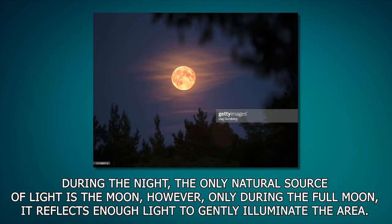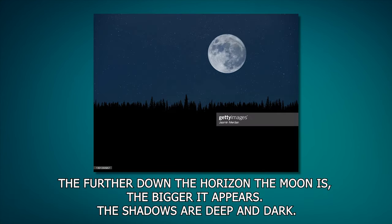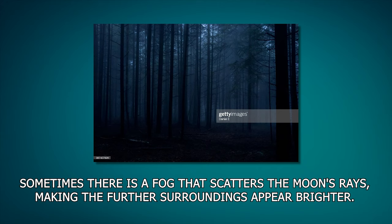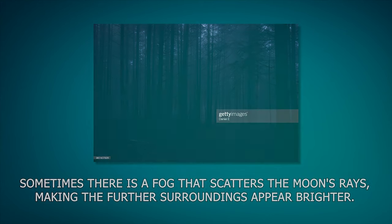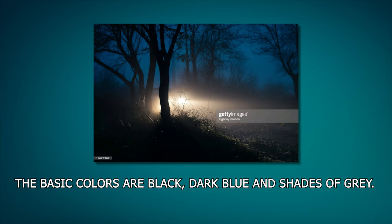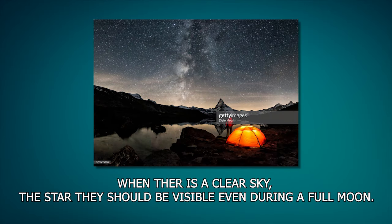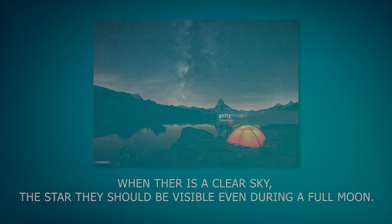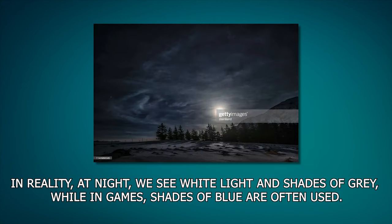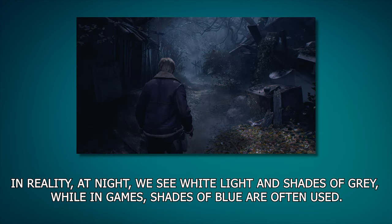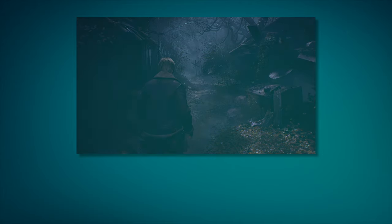During the night the only natural source of light is the moon. However, only during the full moon does it reflect enough light to gently illuminate the area. The further down the horizon the moon is, the bigger it appears and the shadows are deep and dark. Sometimes there is a fog that scatters the moon's rays, making the further surroundings appear brighter. The basic colors during the night are dark blue, black, and shades of grey. When there is a clear sky, the stars should be visible even during a full moon. In reality at night we see white light and shades of grey, while in games shades of blue are often used. And now let's move to Unity and create night lighting.